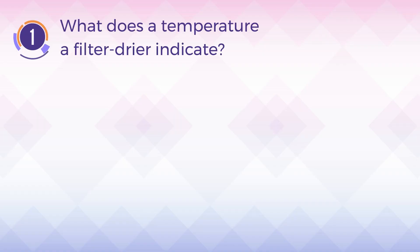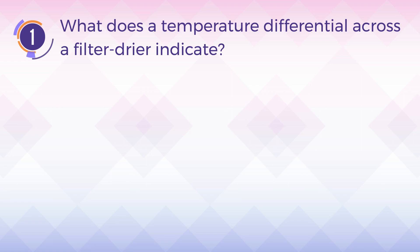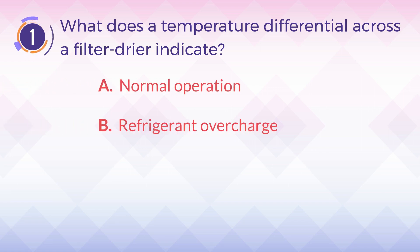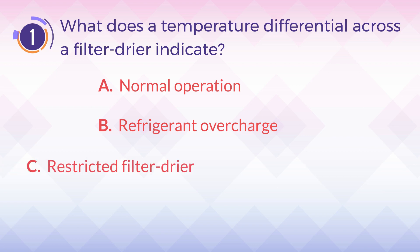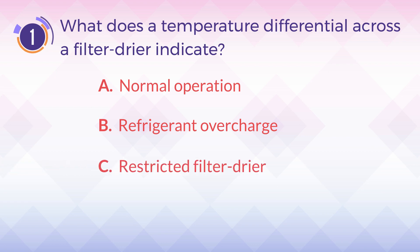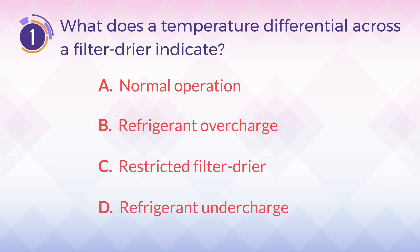Number 1. What does a temperature differential across a filter dryer indicate? A. Normal operation. B. Refrigerant overcharge. C. Restricted filter dryer. D. Refrigerant undercharge.